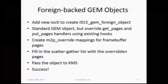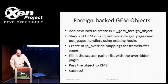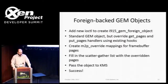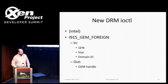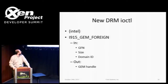To do this, a new ioctl is added to GEM. It's very simple because the get_pages and put_pages functions are already hooked. It takes some additional parameters, overrides get_pages and put_pages, calls into Xen with the translate hypercall, sets up the table, and fills in the scatter-gather list. Basically you give it the guest frame number, the size, and the domain ID, and it gives you a GEM handle.